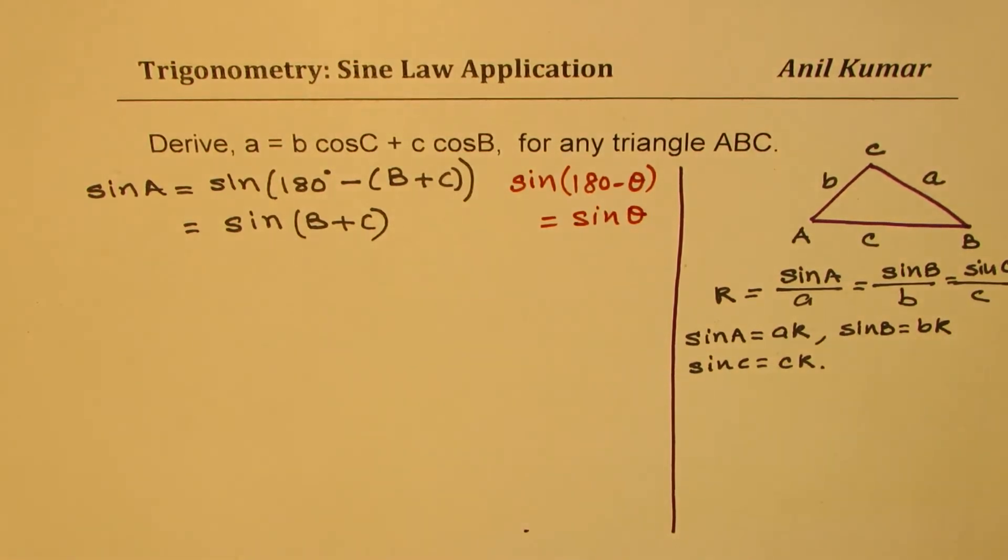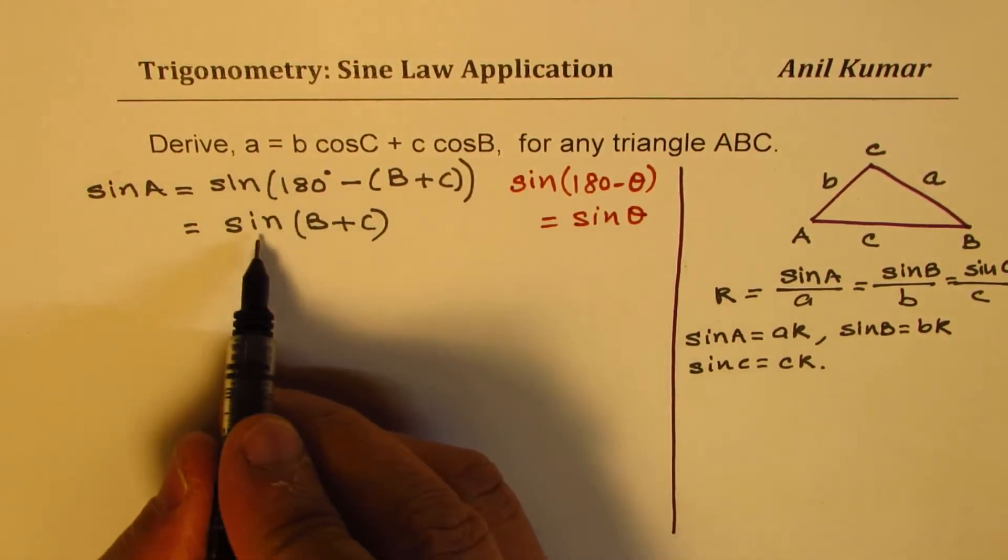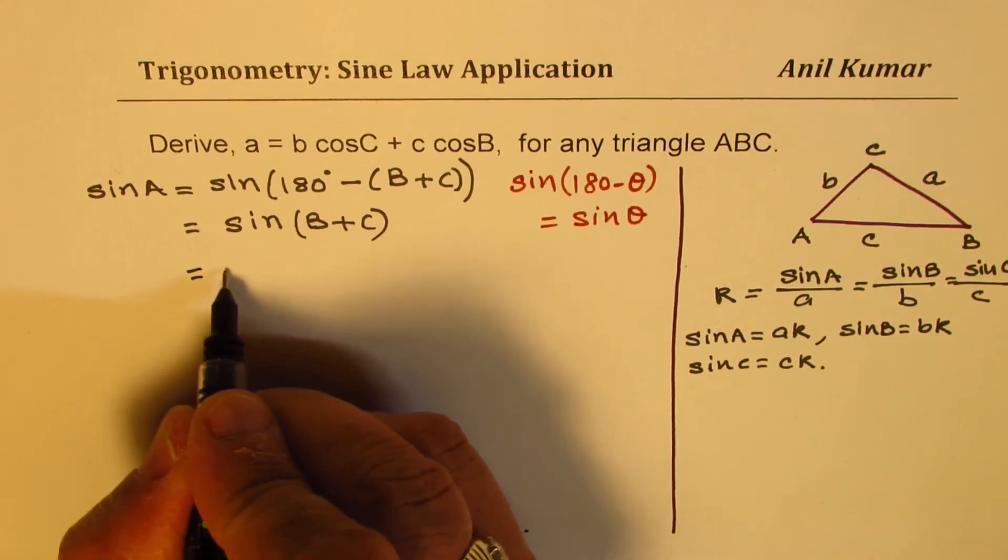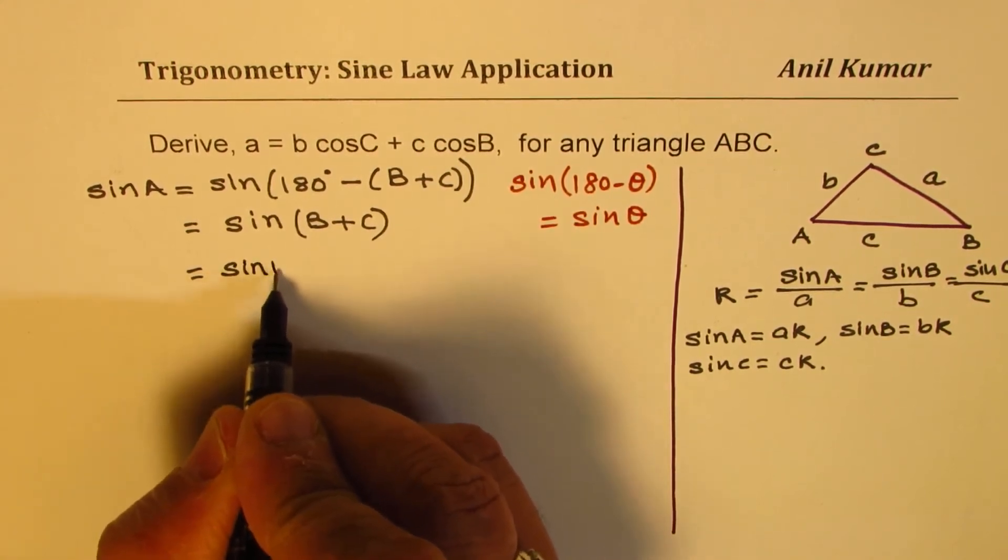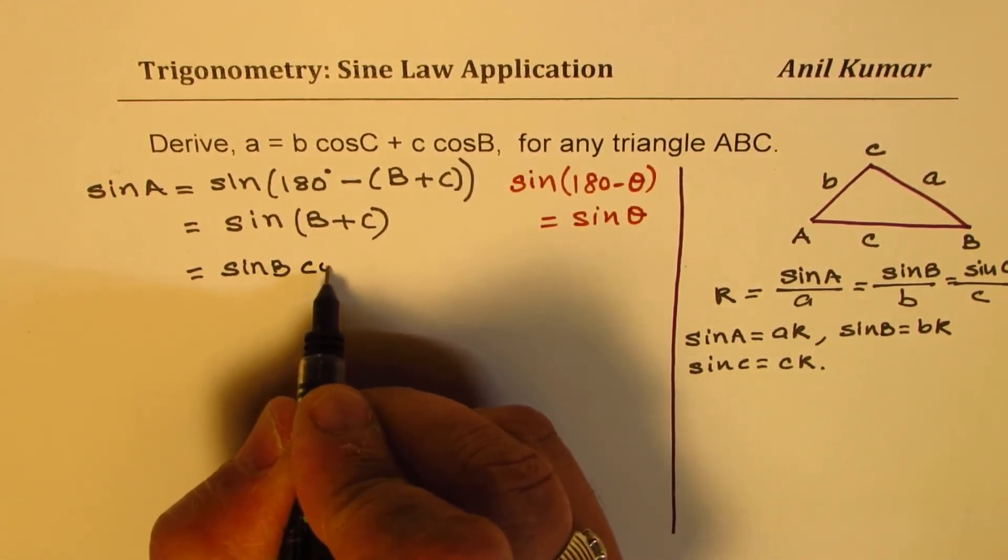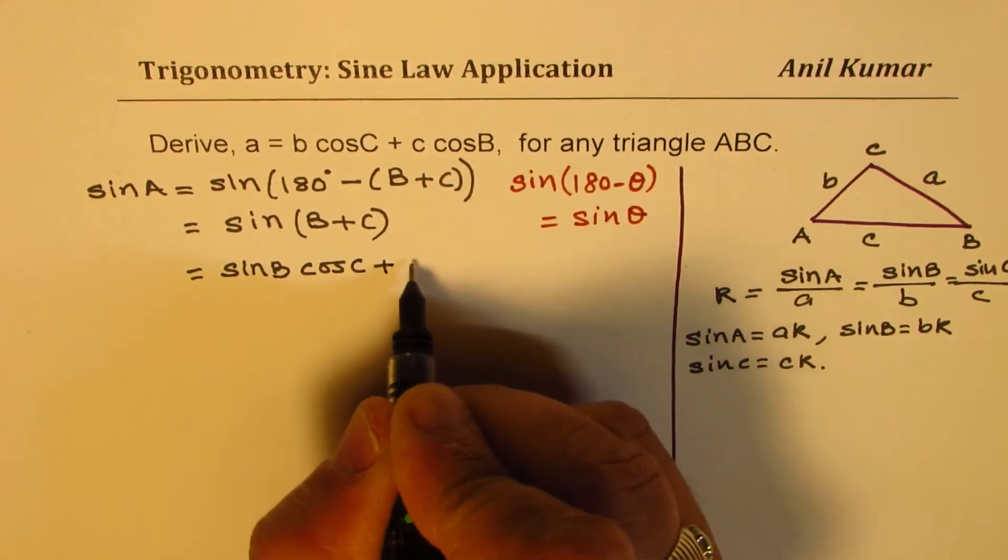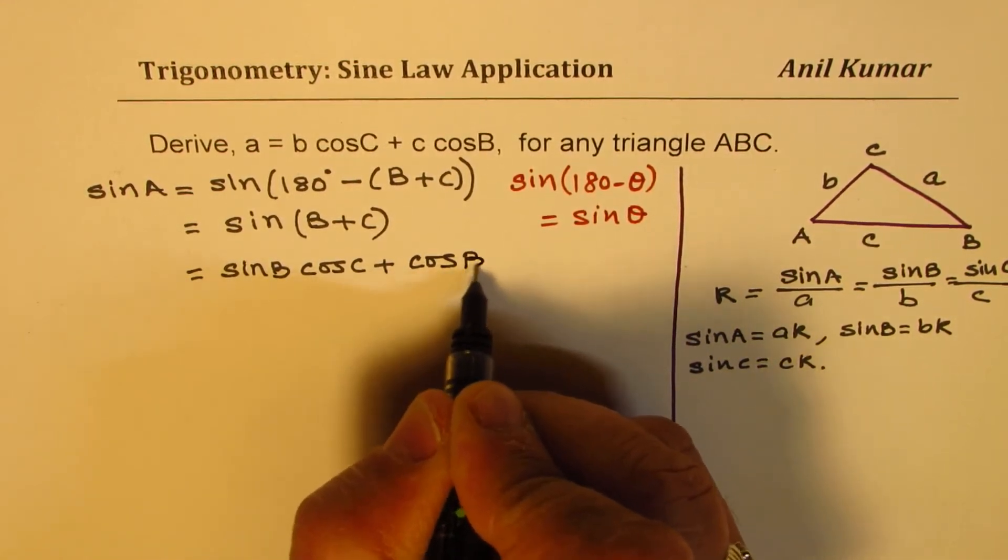Now, we can apply the compound angle formula. Sine B plus C means sine B cos C plus cos B sine C.